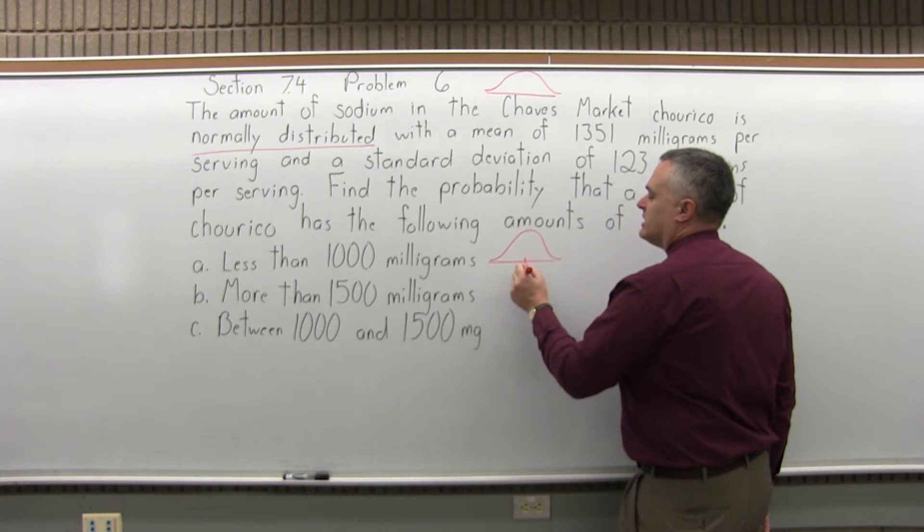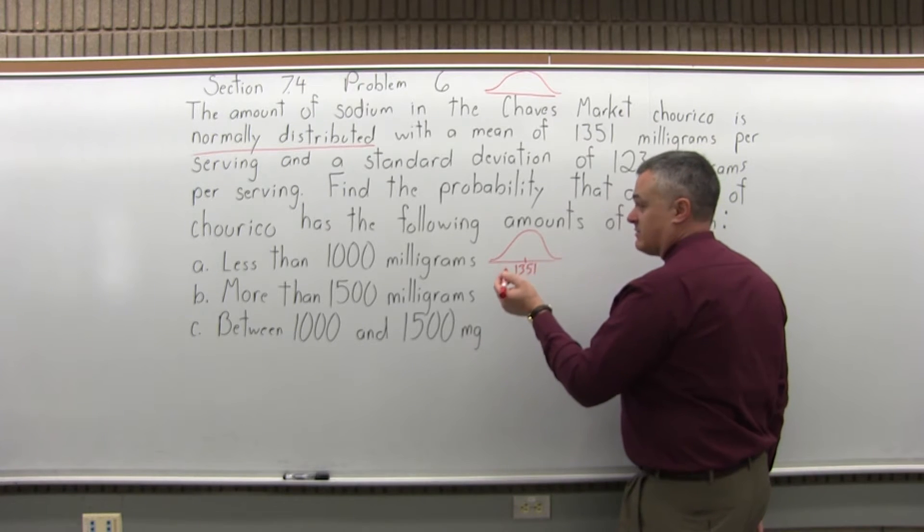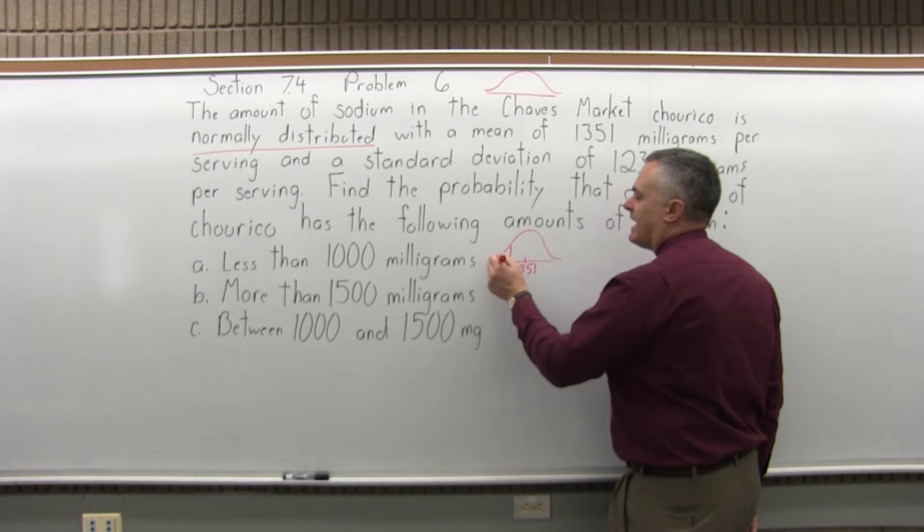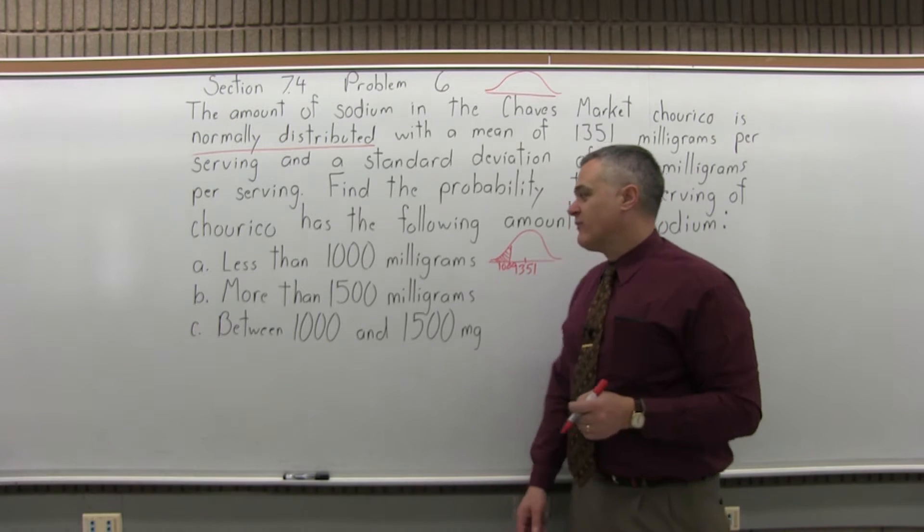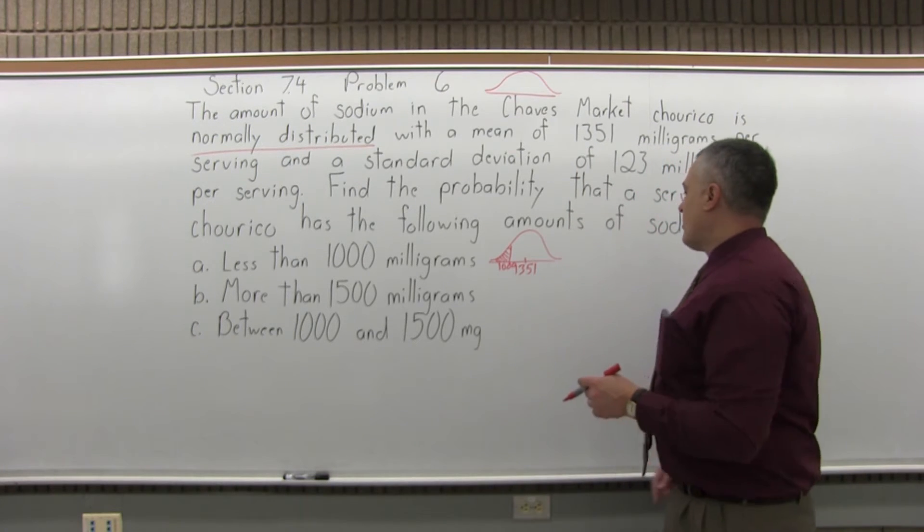The average is 1,351, so 1,000 is a little less and they want the probability of being less than 1,000. So that's visually what we're looking for. Let's convert that 1,000.